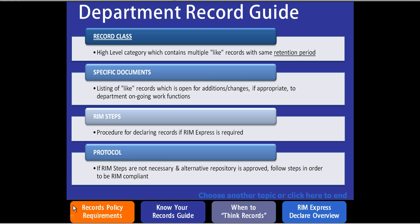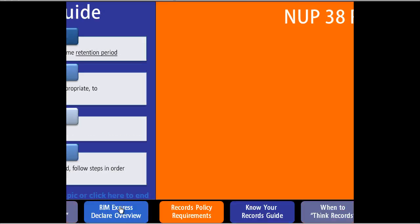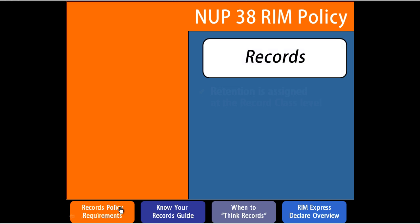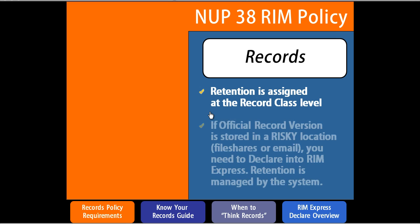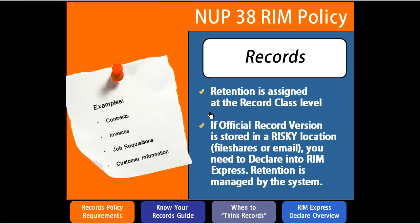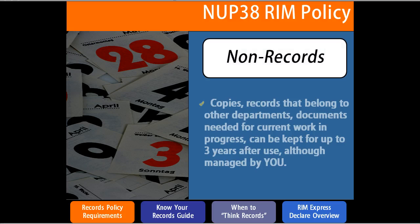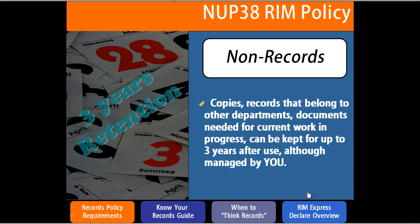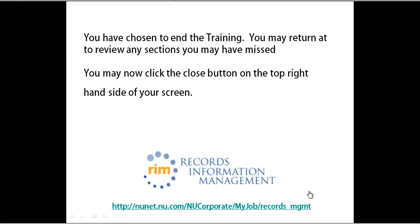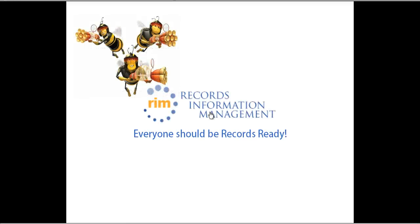The controlling factor here is actually the menu that's at the bottom of each of the slide sections. So if I click on 'Record Policy' you notice that the menu is still there at the bottom — the content itself can be changed. I also added at the bottom of the slides at the end of each topic a little prompt that says 'choose another topic' or 'click here to end.' If they click here to end it will bring them to the final slide that tells them you've chosen to end the training, and you may return at a later date and review the sections.